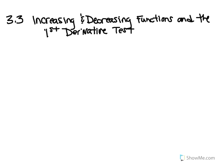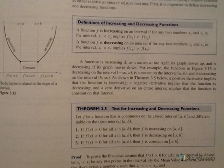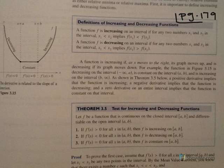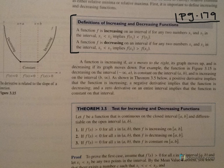Let's first take a look at the textbook — this is on page 179. This section has a lot of definitions, and I want to make sure the picture is here with it. The first box talks about the definitions of increasing and decreasing. A function f is increasing on an interval if for any two numbers x1 and x2 in that interval, x1 being less than x2 implies that f(x1) is also less than f(x2).